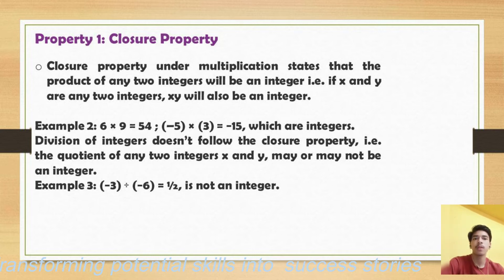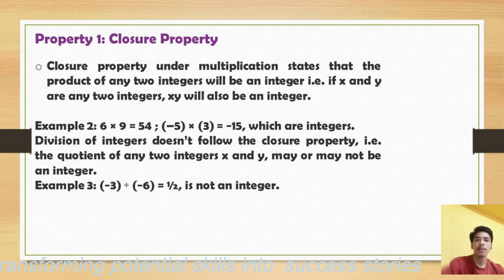The next operation in closure property is division, but division does not follow closure property, because the quotient of any two integers x and y may or may not be an integer. For example, minus 3 divided by minus 6 equals one-half, which is a fraction and not an integer. However, minus 6 divided by minus 3 equals 2, which is an integer. So division does not follow closure property.